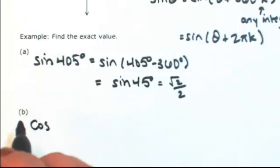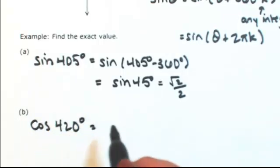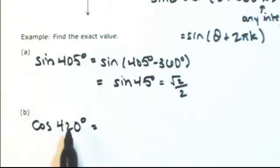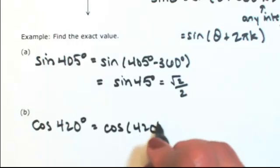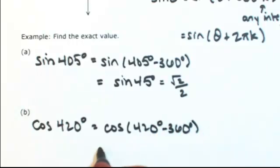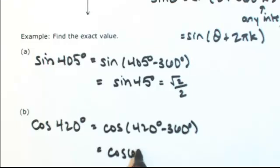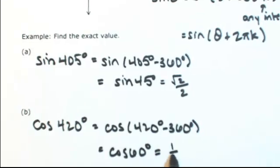Let's say I have the cosine of 420 degrees. Again, this is more than 360, so let's take away 360. So I'm left with the cosine of 60 degrees, which is one half.